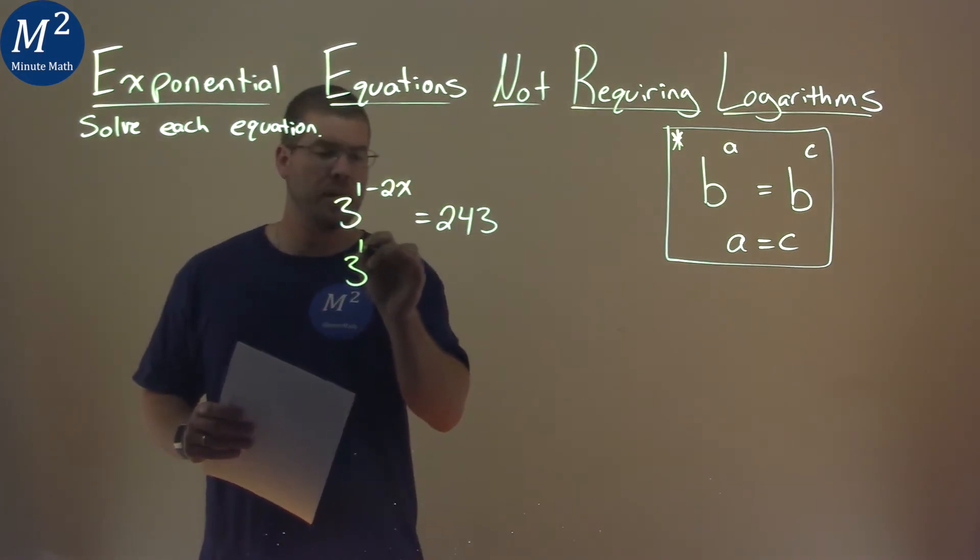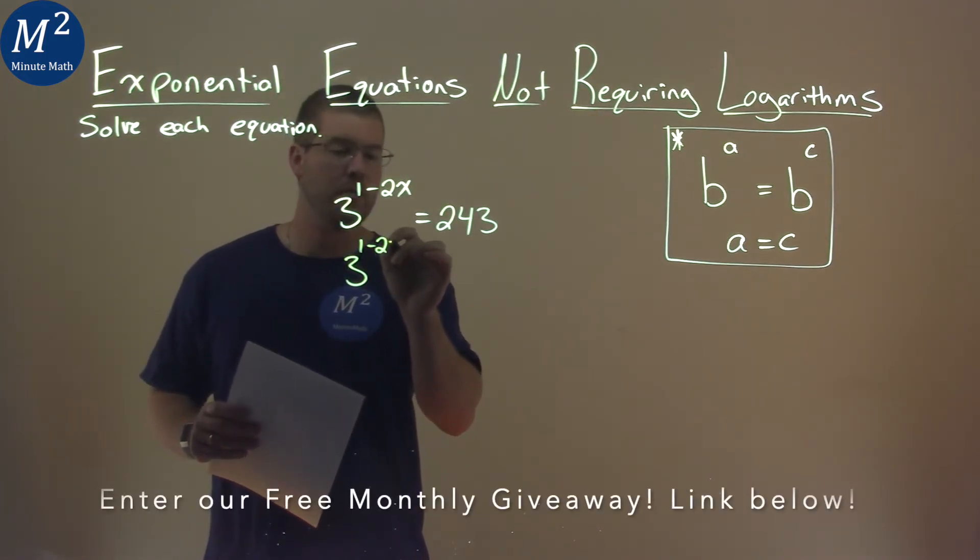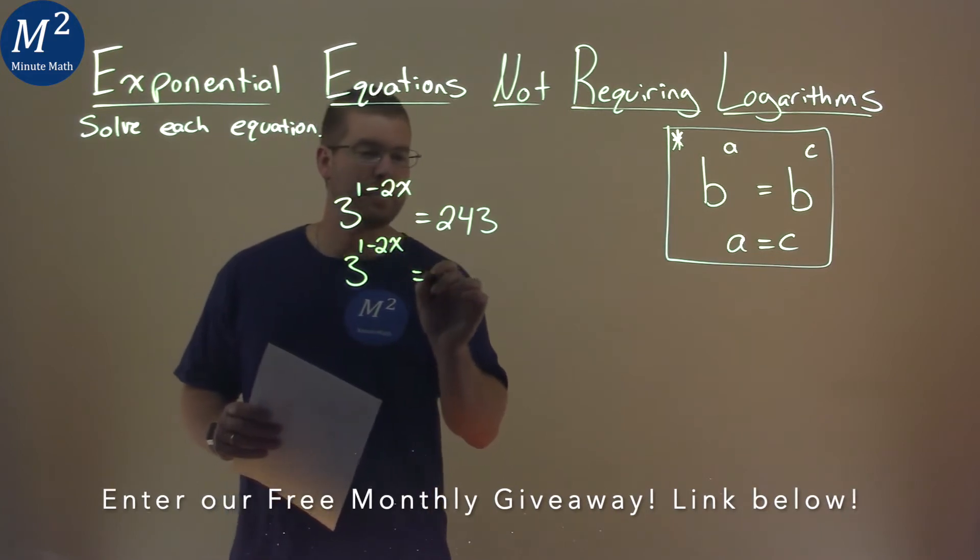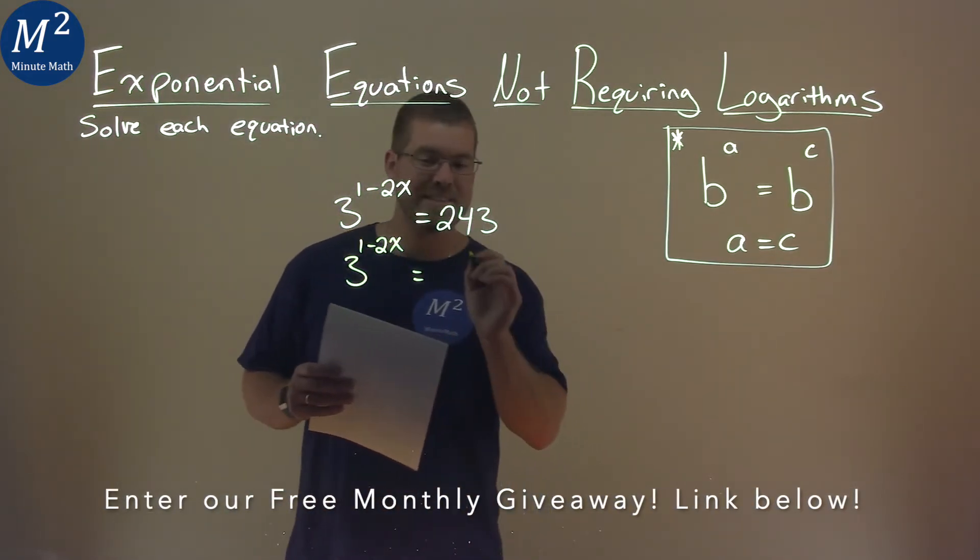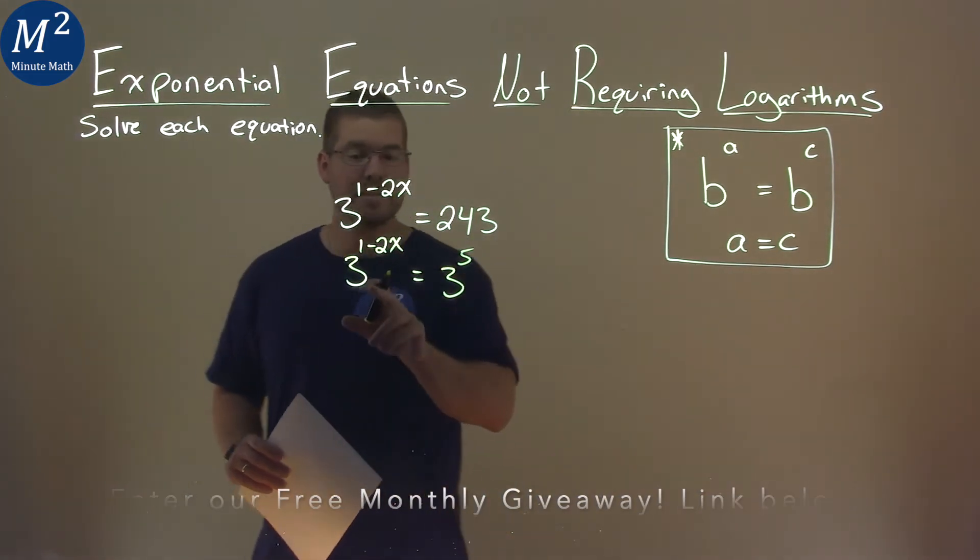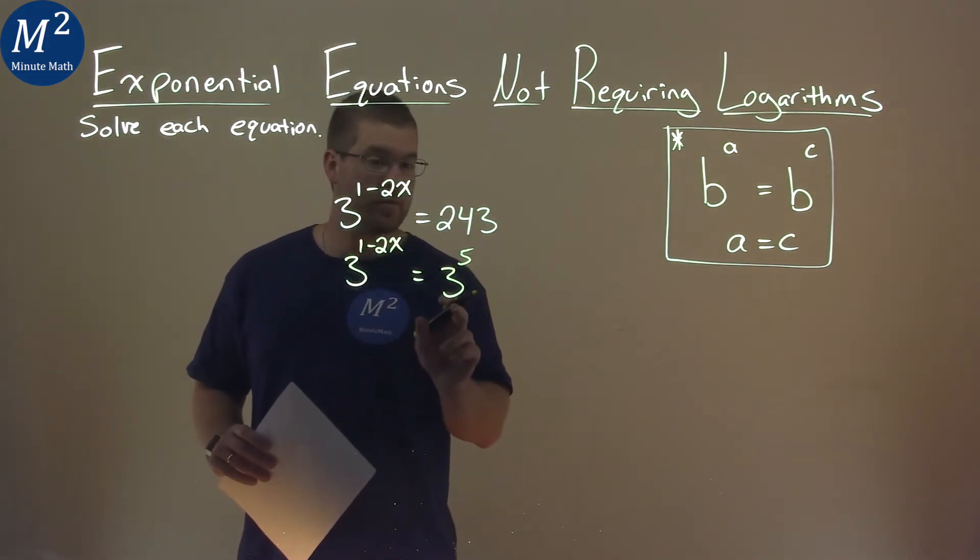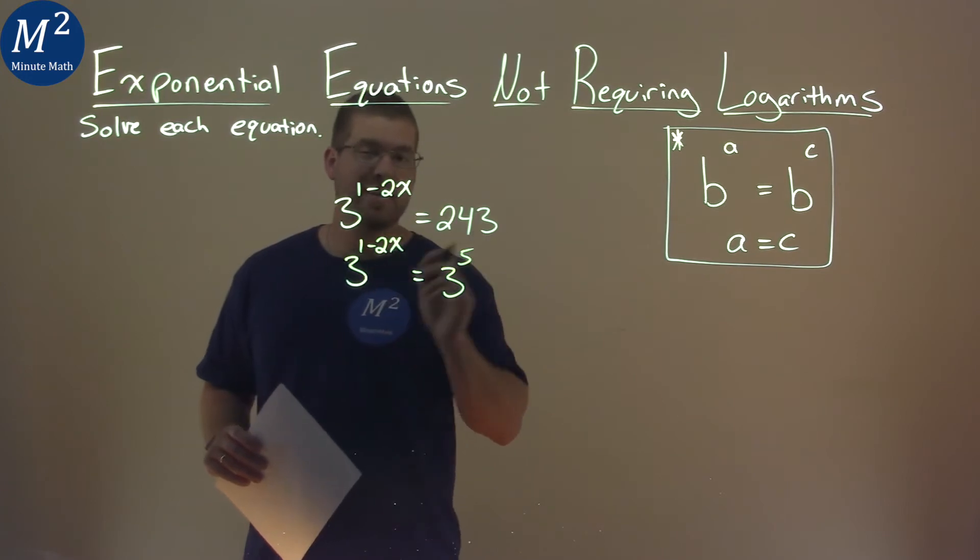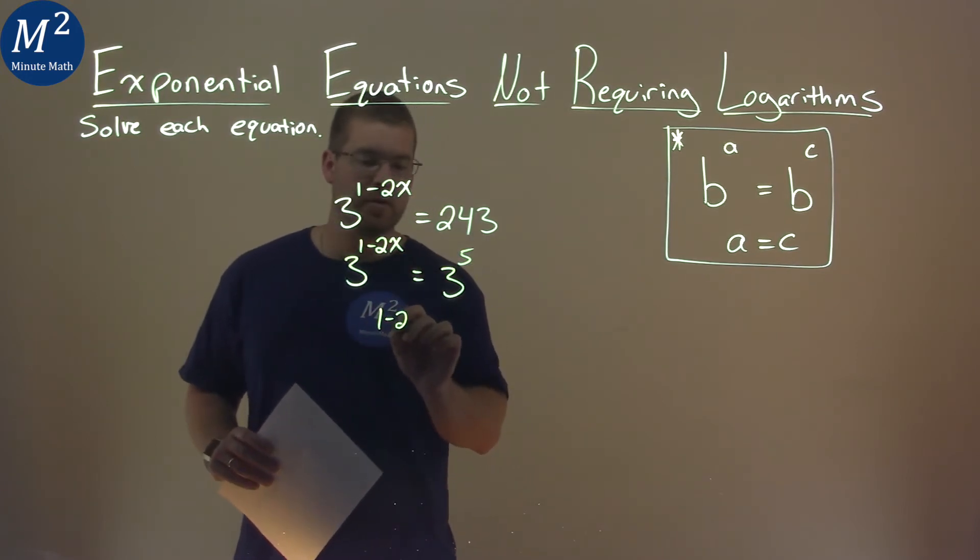So I'll rewrite the left-hand side, 3 to the 1 minus 2x power, and 243 is the same thing as 3 to the 5th power. When this happens, we know the same base is now 3, we can take the exponents and set them equal to each other, and then we solve.